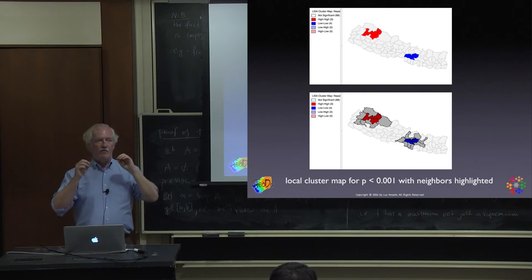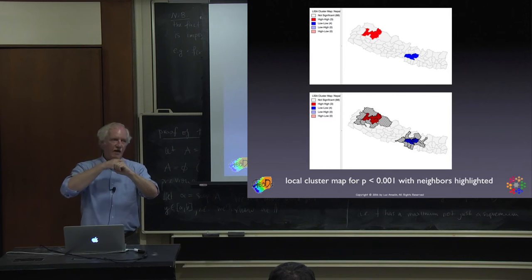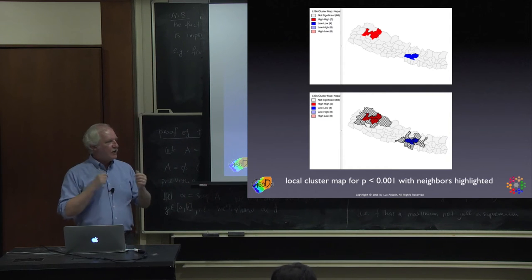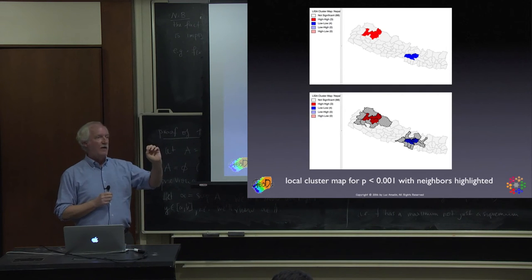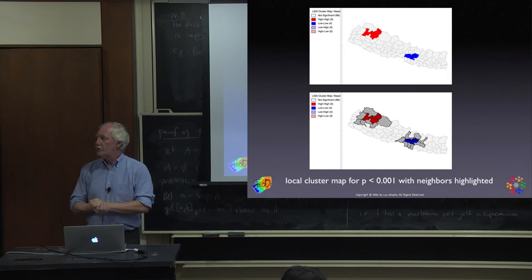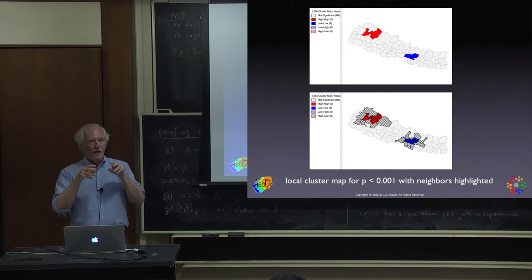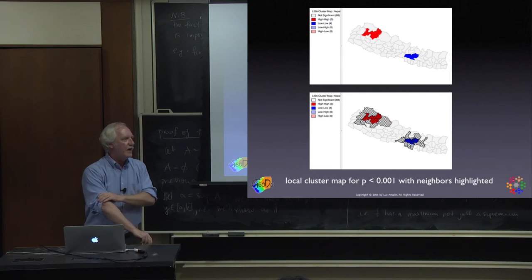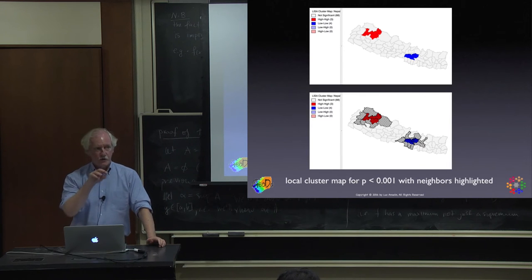The notion of a cluster with a local autocorrelation statistic is the similarity of the value at the location with its neighbors — so neighbors are part of the cluster. With a spatial outlier that's not the case; it's different from its neighbors, so you don't need to include them. If you use this primarily as an exploratory device, you don't have to worry much about cluster boundaries.